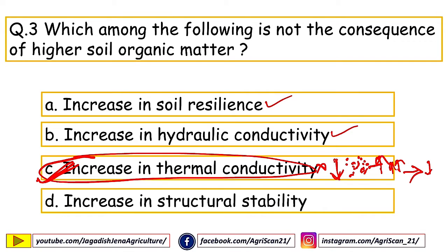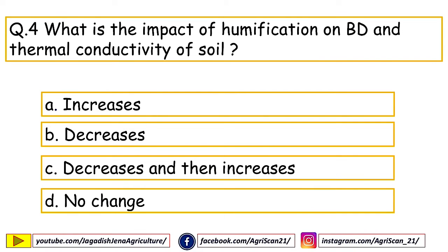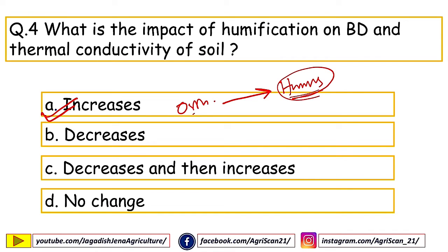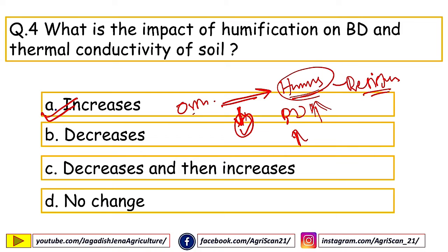Next question: what is the impact of humification on bulk density and thermal conductivity of soil? Options are: increases/decreases, decreases/decreases, increases/increases, no change. The right answer is increases/increases. Humification leads to formation of soil pore space — pore space decreases, porosity decreases, bulk density increases, and thermal conductivity also increases. So both bulk density and thermal conductivity increase on humification.